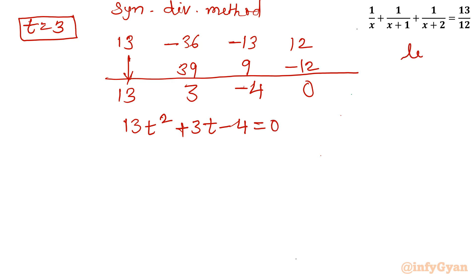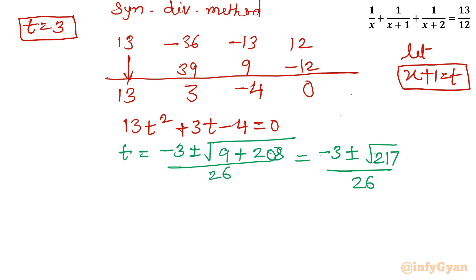Remember our substitution, we will use that a little later. Now I will apply quadratic formula: t equal to minus b, so minus 3 plus minus square root of b square, 9, minus 4ac. It will become plus 16 times 13, so it is 208, divided by 2a, so 26. So I can write minus 3 plus minus square root of 217 over 26. So here we are having three solutions for the cubic polynomial in t. Let me write t is equal to 3 and minus 3 plus minus root 217 over 26.